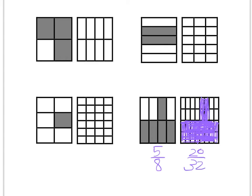And then what we want to do is use cross multiplication to see if they're actually equal. So 32 times 5 and 8 times 20. 32 times 5 ends up being 160. And 8 times 20 ends up being 160. So they're both equal.